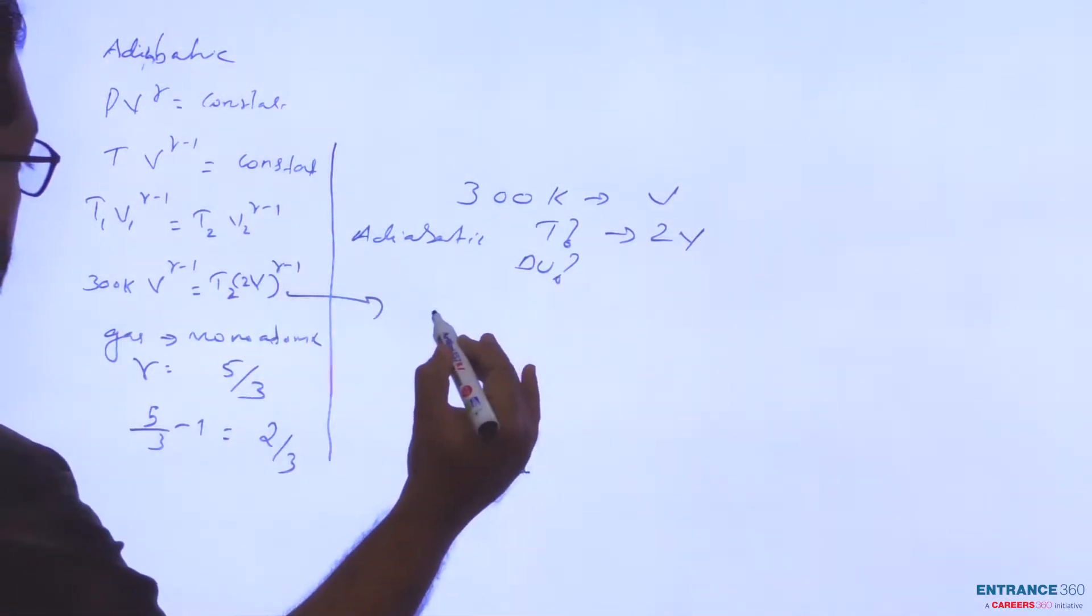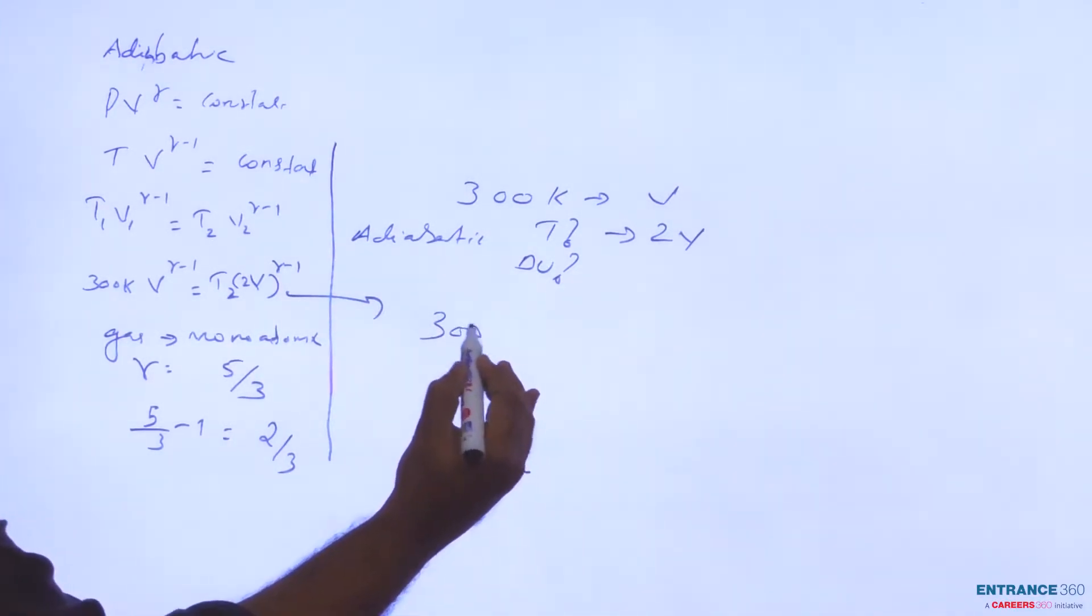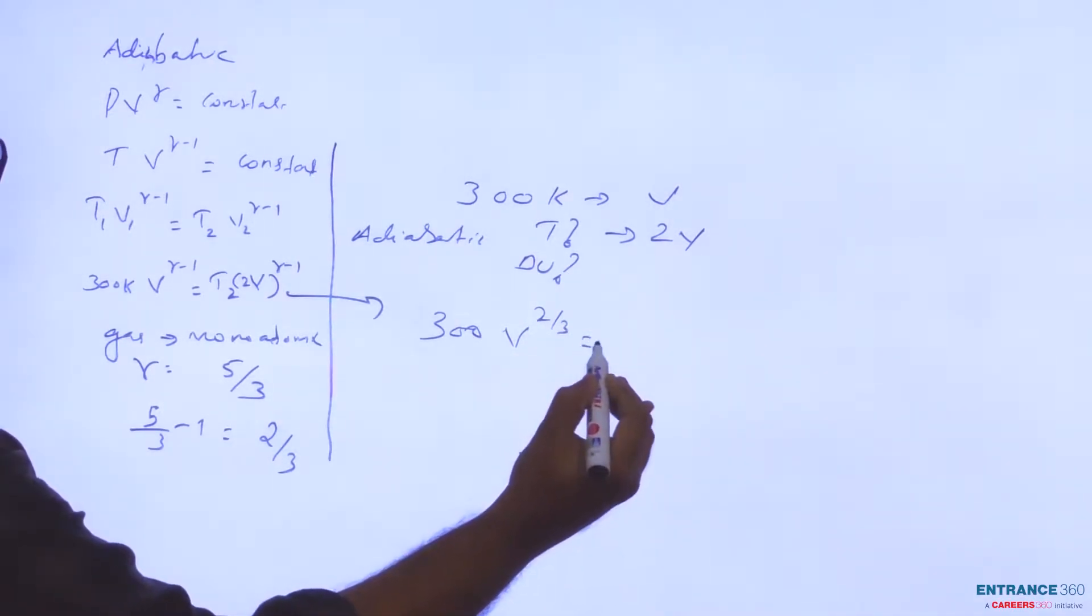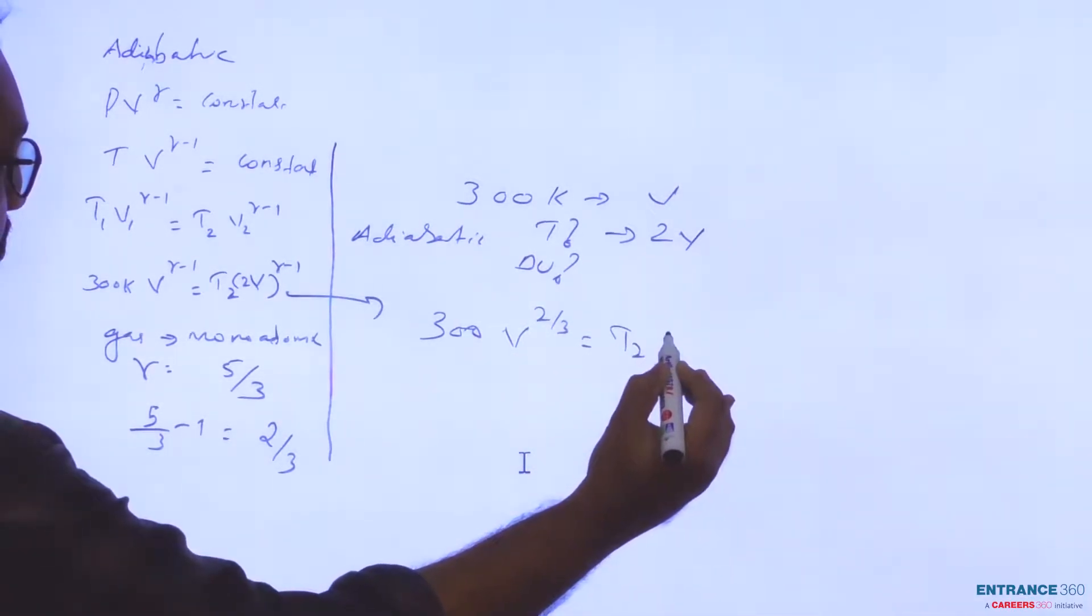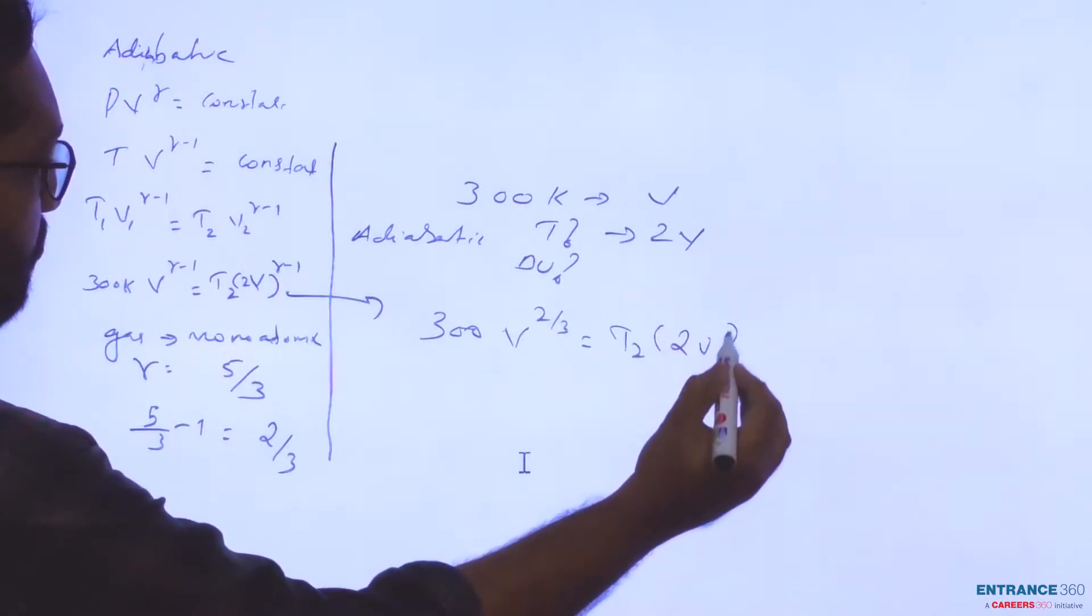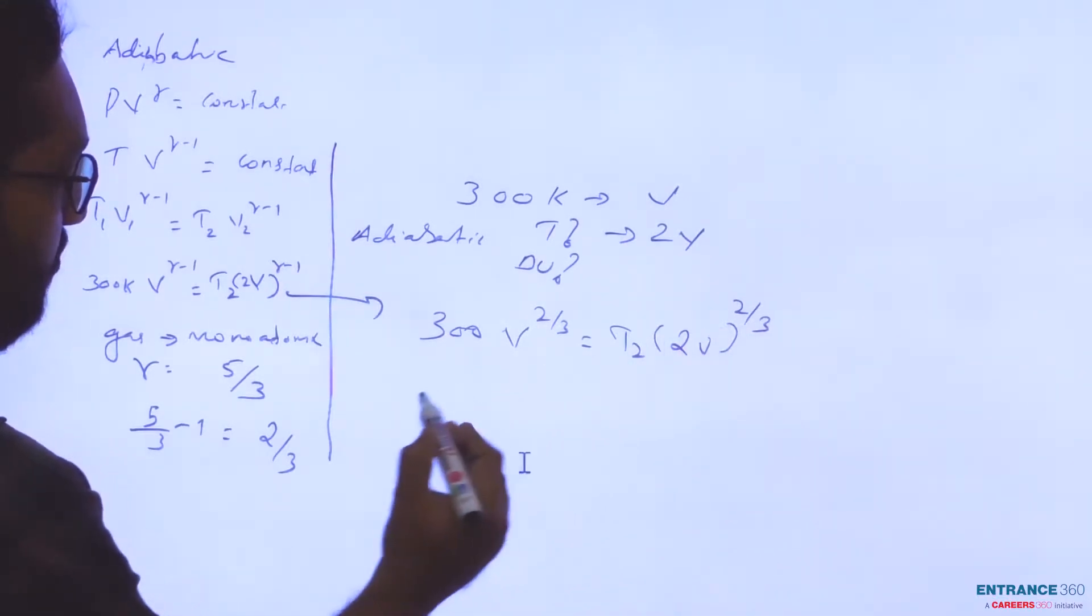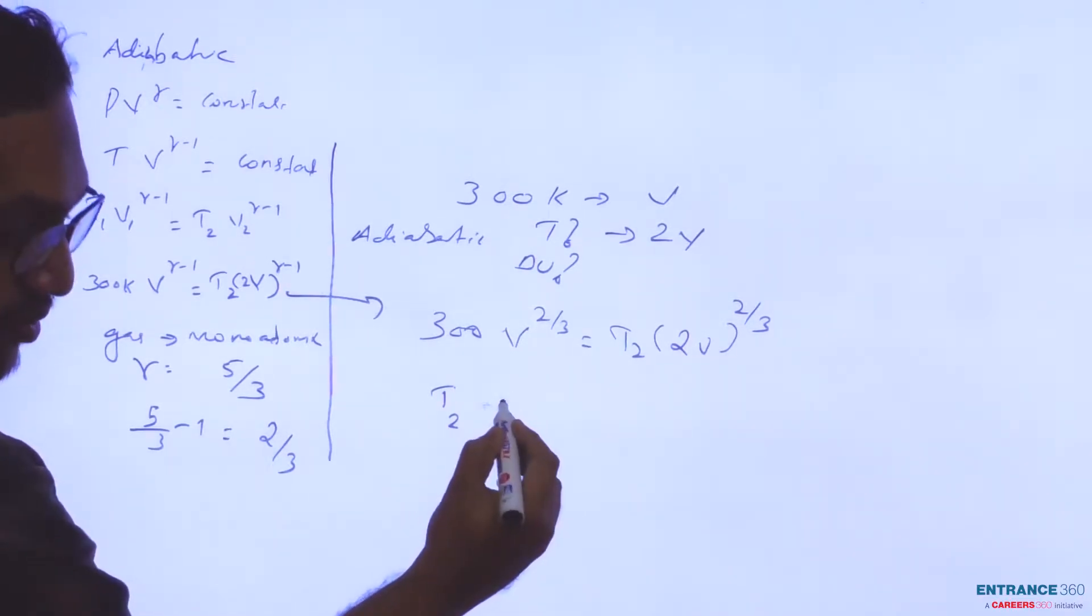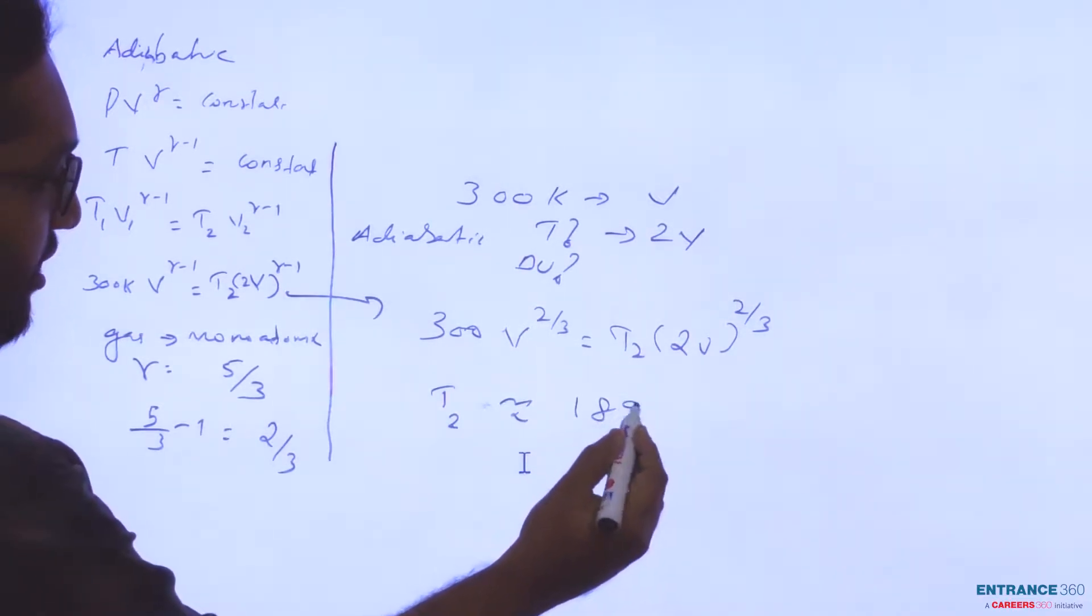From here we can write 300×V^(2/3) = T2×(2V)^(2/3). On solving this, you will get the value of T2 as approximately 189 Kelvin.